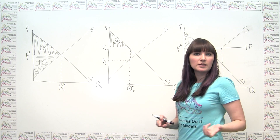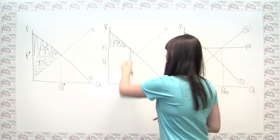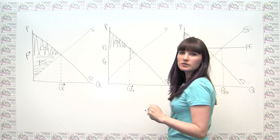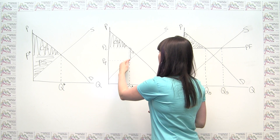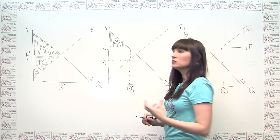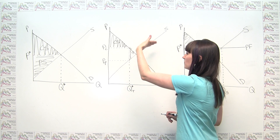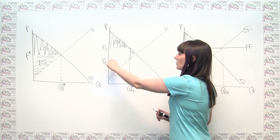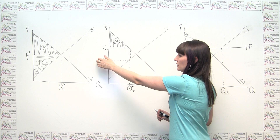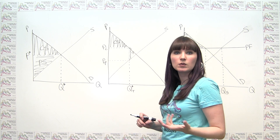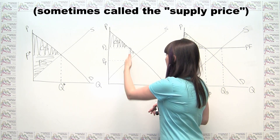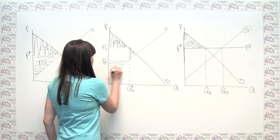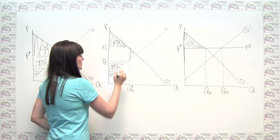In the tax example, using the wedge diagram, producer surplus is the area above the supply curve — and this is easy to see since neither the supply nor demand curve has actually moved. It's below the price relevant for the producer, which is the lower price the producer gets to keep after the tax is placed on the market, and to the left of the quantity transacted. Again, we get a triangle.